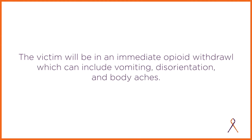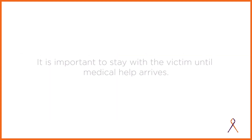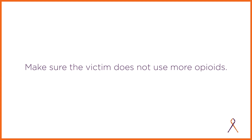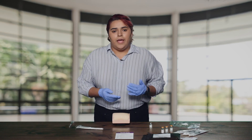If the naloxone reverses an overdose, the victim can come out of an overdose state very suddenly. The victim will essentially be in immediate opiate withdrawal, which can include vomiting, disorientation, and body aches. It is important to stay with the victim until medical help arrives and make sure they do not try to use more opiates. Once the naloxone wears off, they can slip back into an overdose if there are still opiates present in their system. If and when you feel comfortable doing so, you may consider encouraging the victim to seek additional treatment if they feel they might have a substance use disorder.